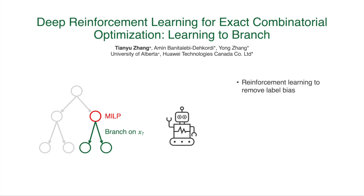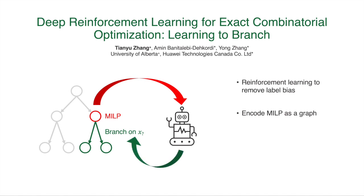In this study, we investigate how to use a reinforcement learning agent to pick branching candidates, given the mixed integer linear programming problem, so that we do not need to provide labels when training deep learning models. We encode the problem as a graph and use graph convolutional neural networks as the policy network. We trained the agent using proximal policy optimization and Monte Carlo tree search, and found that the trained agent performs better than the state-of-the-art machine learning model on complex problems.